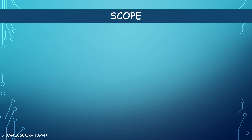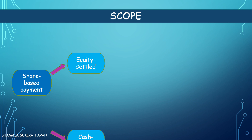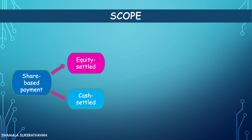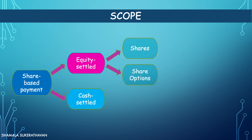IFRS 2 applies to all share-based payment transactions, with the two main types being equity-settled and cash-settled share-based payment transactions. In the case of equity-settled share-based payment, an entity acquires goods or services in exchange for an entity's equity instrument, e.g. shares or share options.